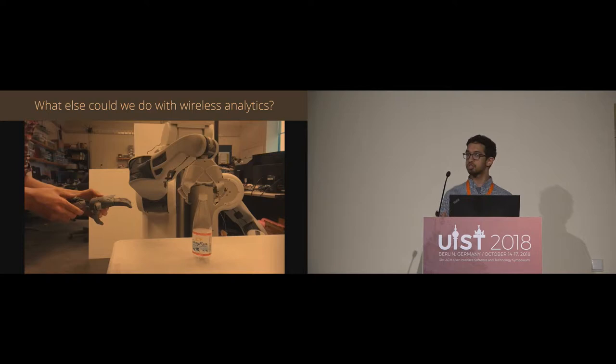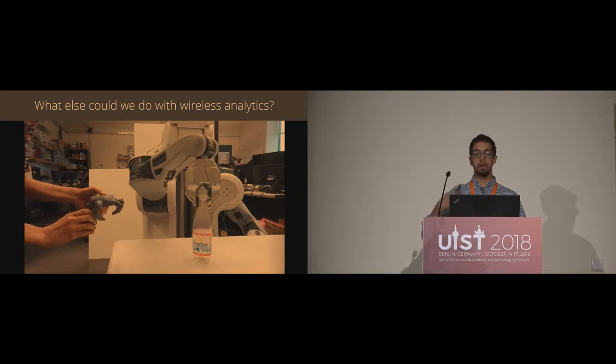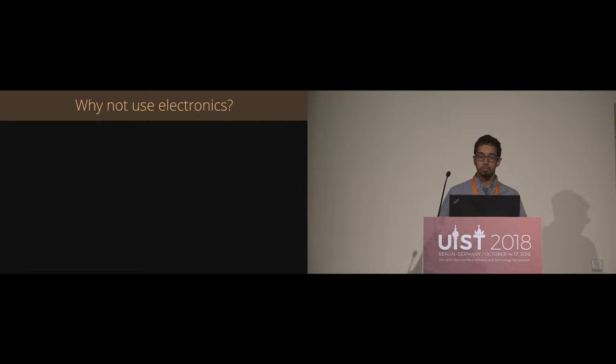Now, if we think beyond everyday objects that we use, we can imagine also more exciting applications like tracking the motion of a printed hand like this and mapping that to control a robot arm. So at this point, I've shown you some cool things that we could do if we could track the use of 3D printed objects. And the most obvious way to do that would be to attach electronic sensors to them.